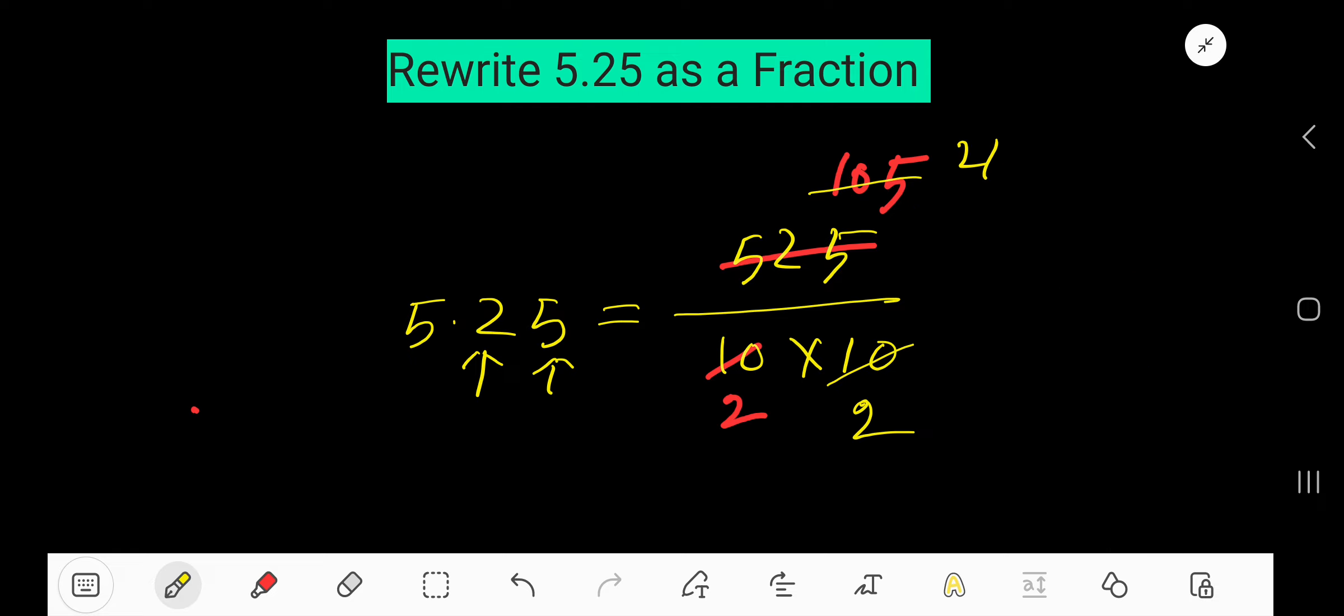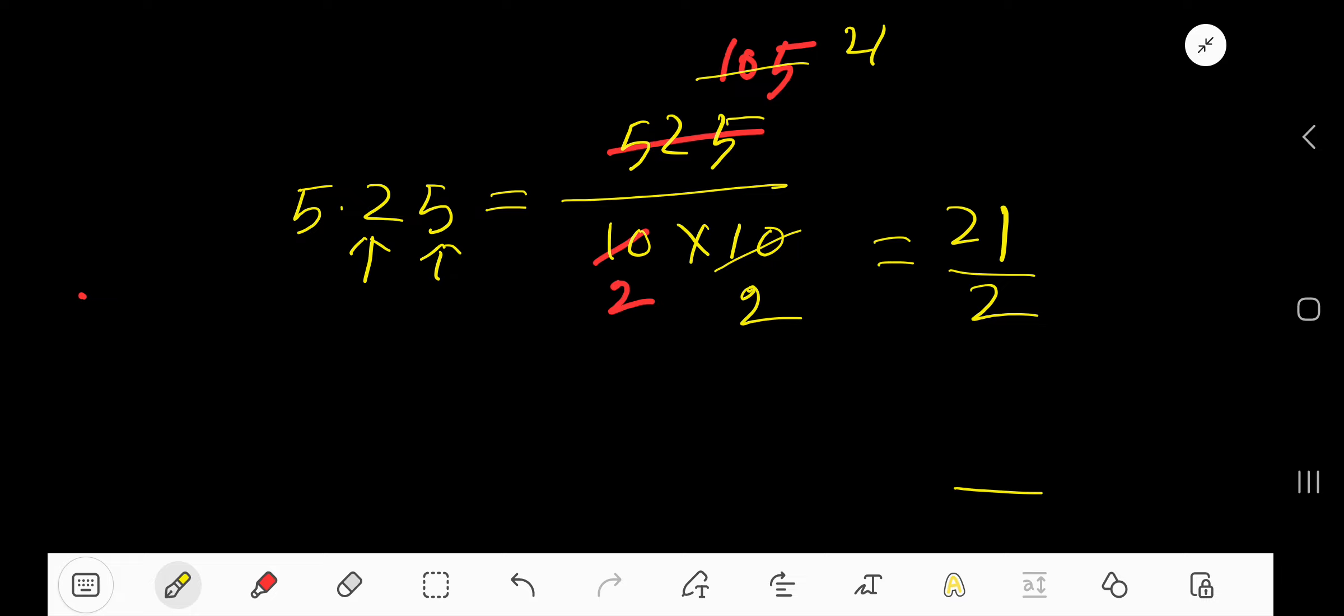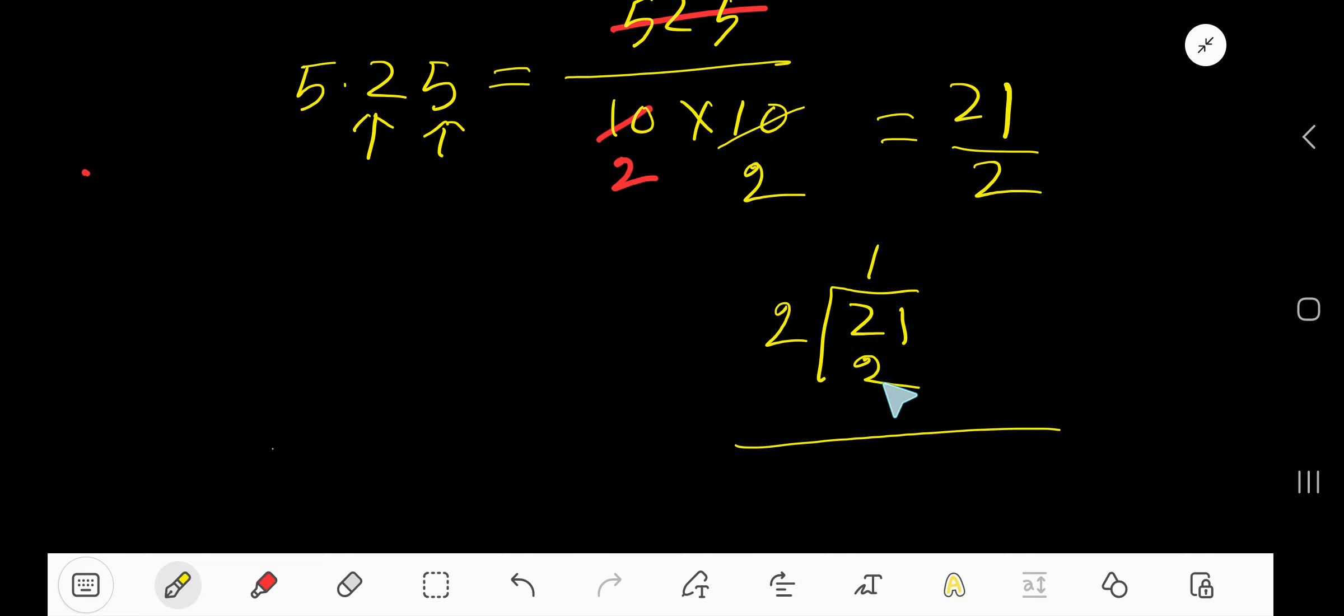That is, we are getting 21 divided by 2. This is an improper fraction because numerator is greater than denominator. So we need to convert this. 2 goes into 2 how many times? 1 times. 1 times 2 is 2. If you subtract, then you are getting 0. Bring down this 1.